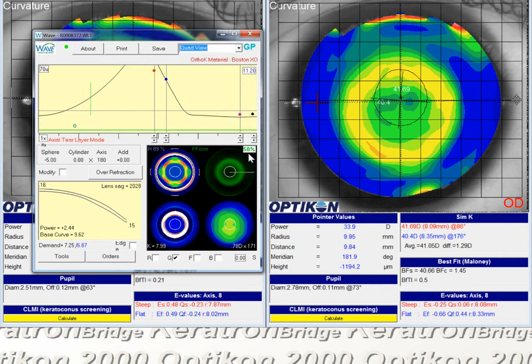You have a funny kink in the graph there, so I'm going to just trial and error. Now we've got one in the oblique meridian.